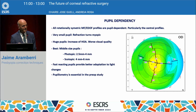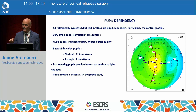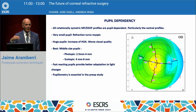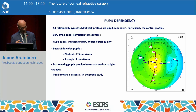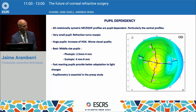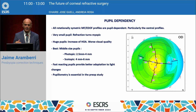Very important: there is pupil dependency. All rotationally symmetrical multifocal profiles are pupil dependent, particularly the central profiles. If the pupil gets very small, refraction turns myopic. In huge pupils, there will be an admixture of refractions from the near and distant parts, and of course worse visual quality. The best are the middle-sized pupils — photopic something between 3–4 mm, scotopic between 4–6 mm. We love fast-reacting pupils, so pupil dynamics should be studied as well, because those patients adapt quicker.